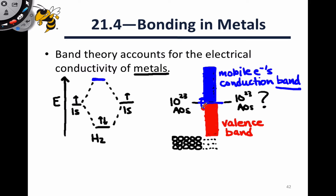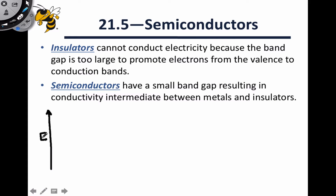An electron has to be excited from the valence band to the conduction band to actually move through the material. For metals, the gap in energy between the valence and conduction band is very tiny, making this an extremely easy excitation that happens readily at room temperature. In materials that are less electrically conducting or not conducting at all, we can also take this band theory approach, but we'll see a gap between the valence band and conduction band.